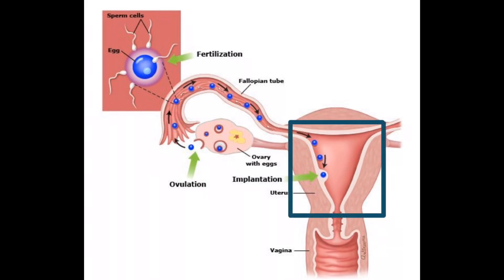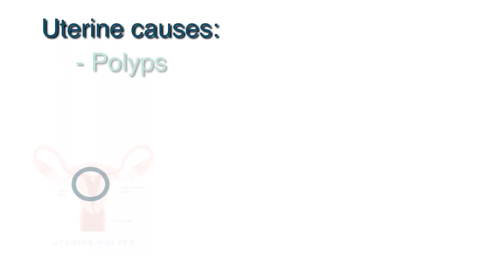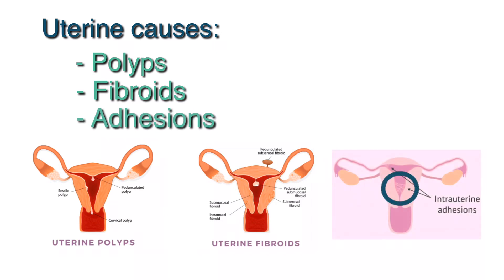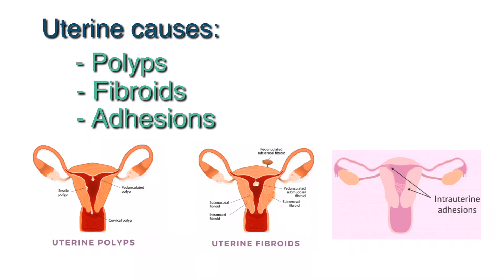Next we'll look at causes of infertility related to the uterus. There are structural problems that can occur within the uterus that can make it difficult to conceive. Some examples include polyps, fibroids, or adhesions — which is scar tissue that can occur within the uterus. These structural problems can often be treated with surgery.